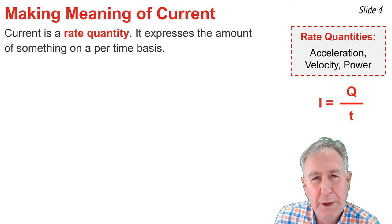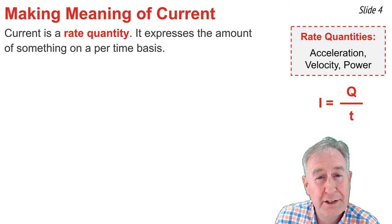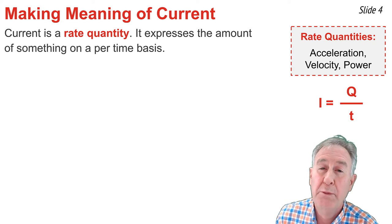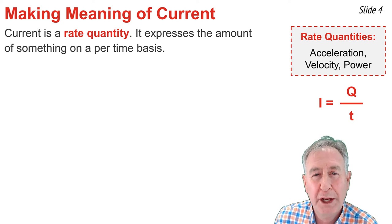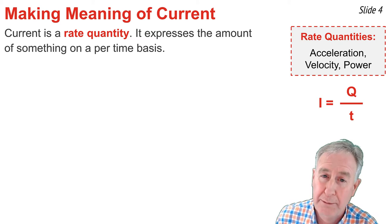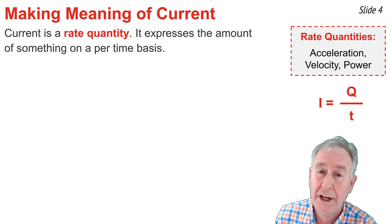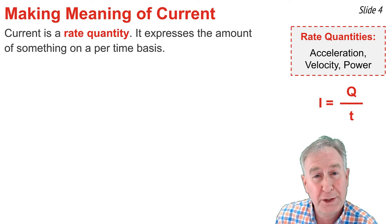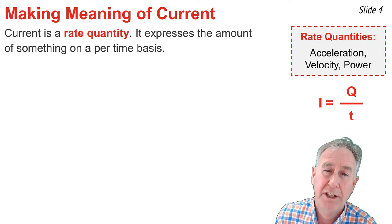Current is a rate quantity. There are numerous rate quantities in physics. Velocity, acceleration, and power are a few of the more popular ones. Like any rate quantity, current expresses the amount of something on a per-time basis. It's the amount or quantity of charge Q that passes by a point on the circuit in a given amount of time, T.